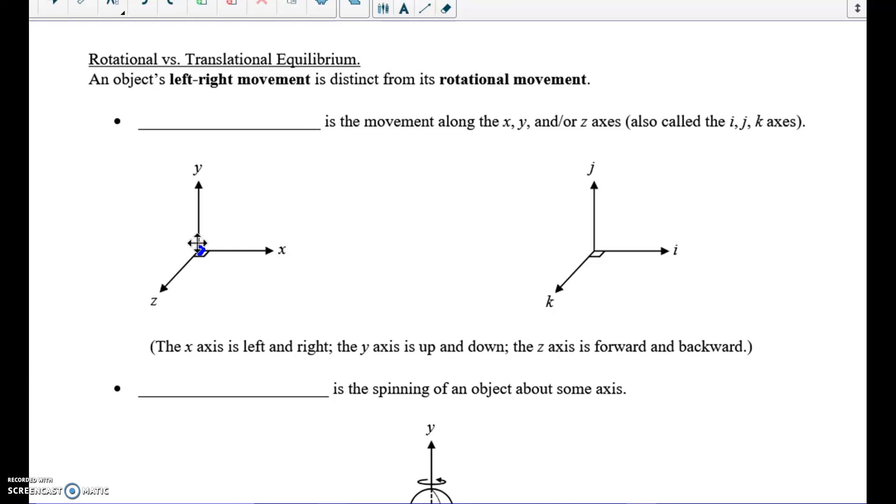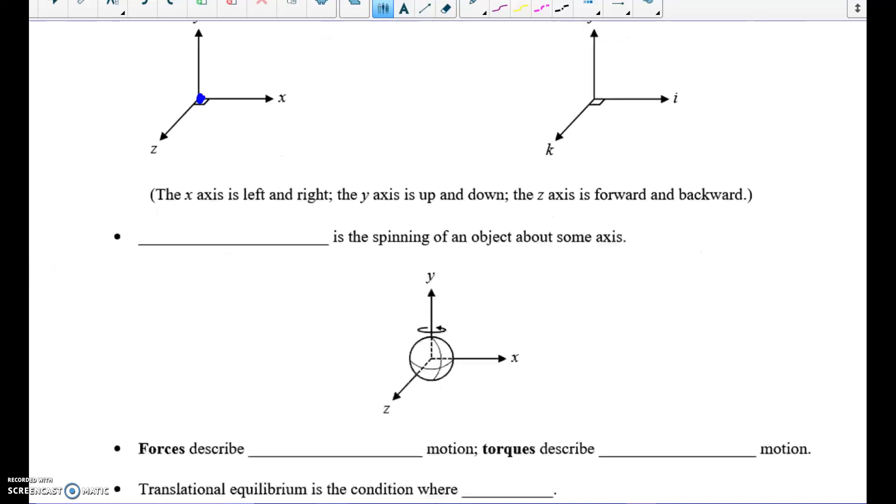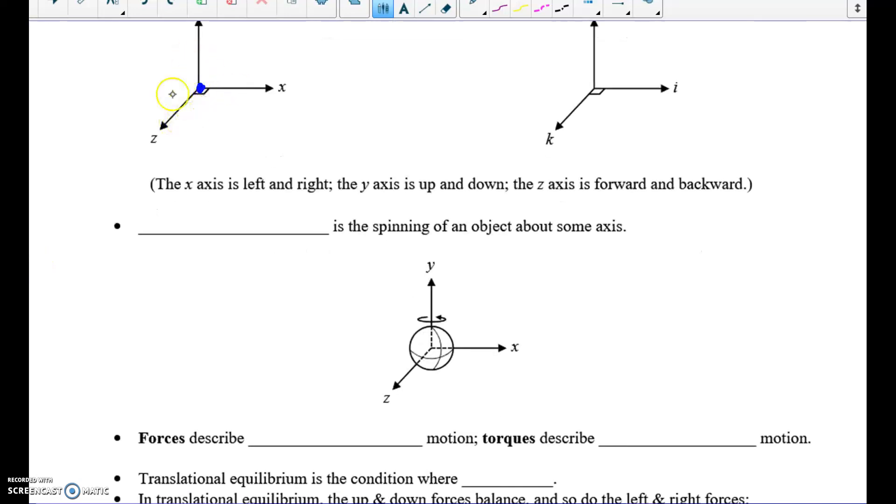But in addition to that, an object can rotate or revolve. And in the same way that we saw it could move on the x, y, or z-axes, it could rotate about the y-axis.